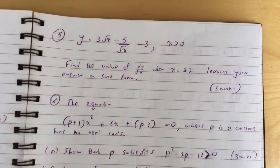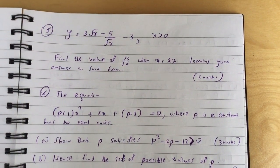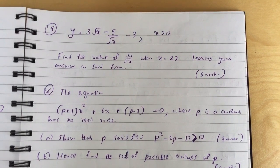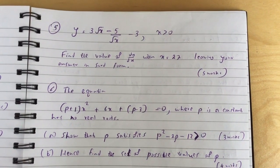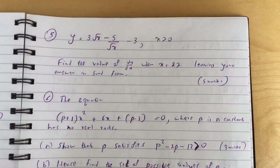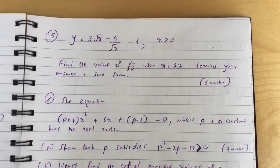Question 5: y equals 3 root x minus 5 over root x minus 3, where x is greater than 0. Find the value of dy/dx when x equals 27, leaving your answer in surd form.